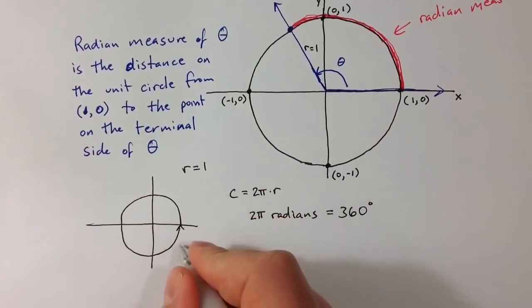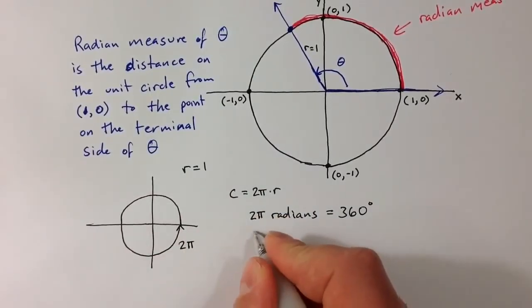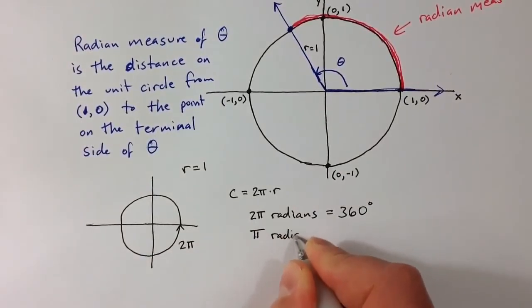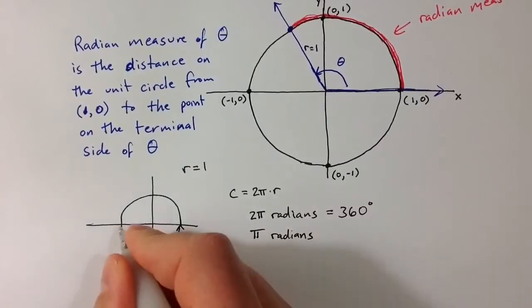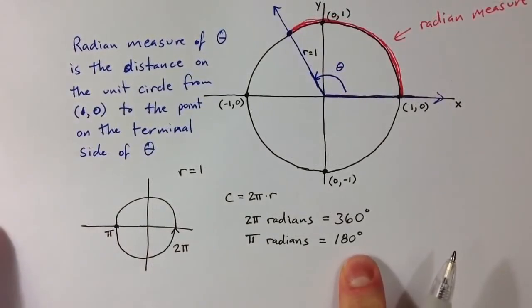A full circle would be 2π radians. Of course, if I take half of that, if I take π radians, I get halfway around the circle. So π radians corresponds to 180 degrees.